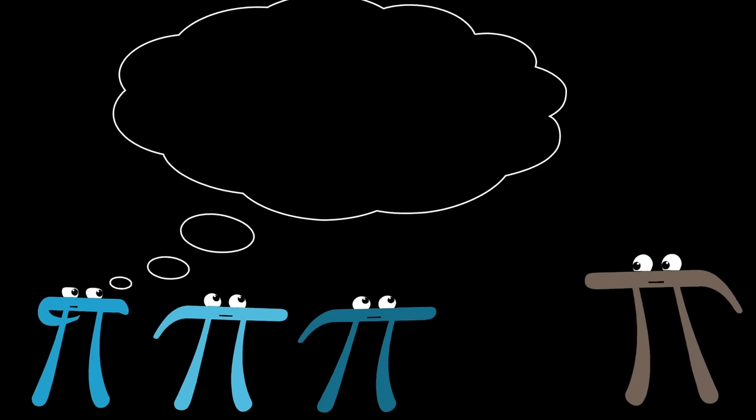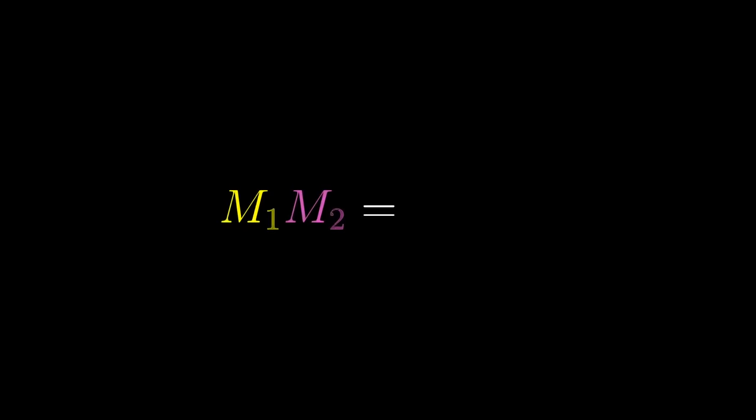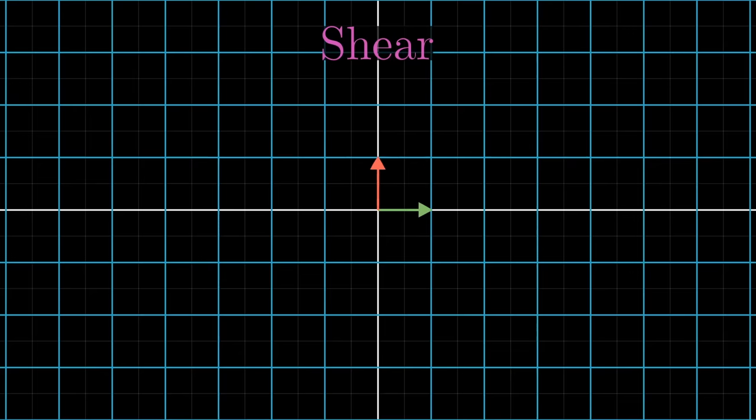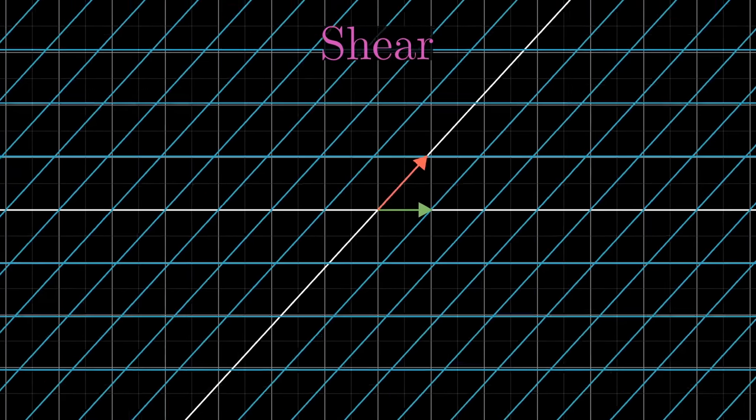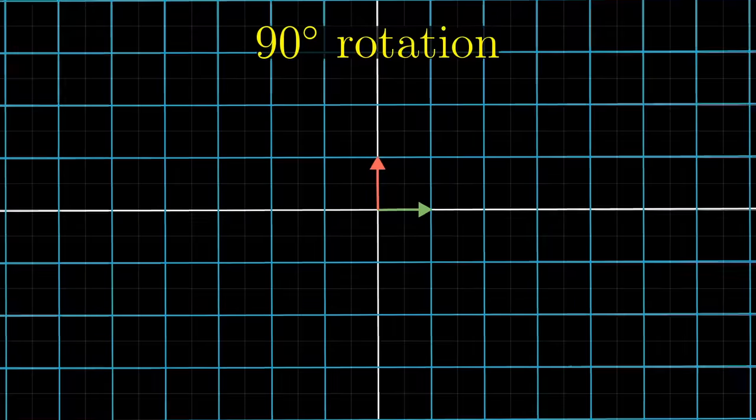For example, here's a question. Does it matter what order we put the two matrices in when we multiply them? Well, let's think through a simple example, like the one from earlier. Take a shear, which fixes i hat and smooshes j hat over to the right, and a 90 degree rotation.